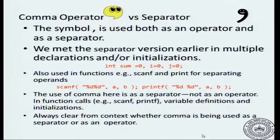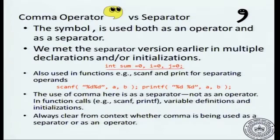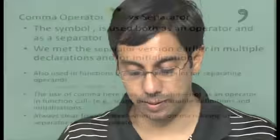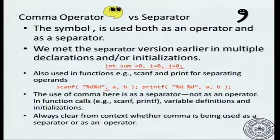There is also a slightly different meaning of the comma in C — it is also used as a normal separator. The separator can be seen in multiple occasions: when you initialize multiple variables and say sum equal to 0, i equal to 0, j equal to 0, this is not a comma expression — it is just a separator as in English. Similarly, when you call a function and use a comma to separate the arguments, that does not mean the arguments are inside a comma expression; here the comma is just a separator. It is always clear from context whether a comma is a separator or an operator.